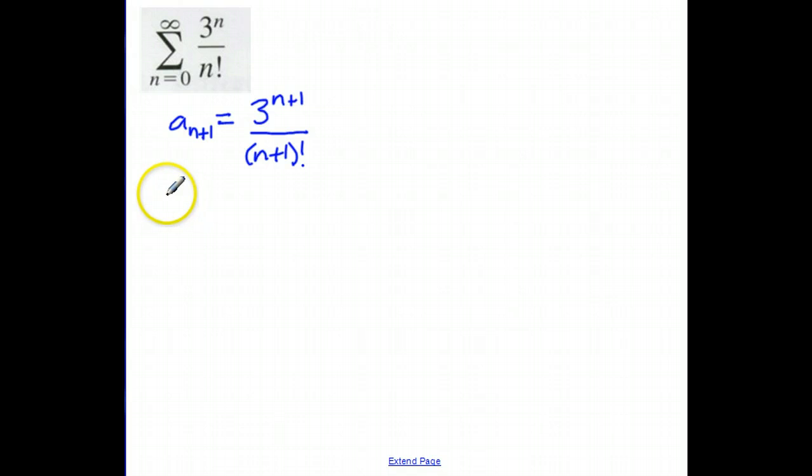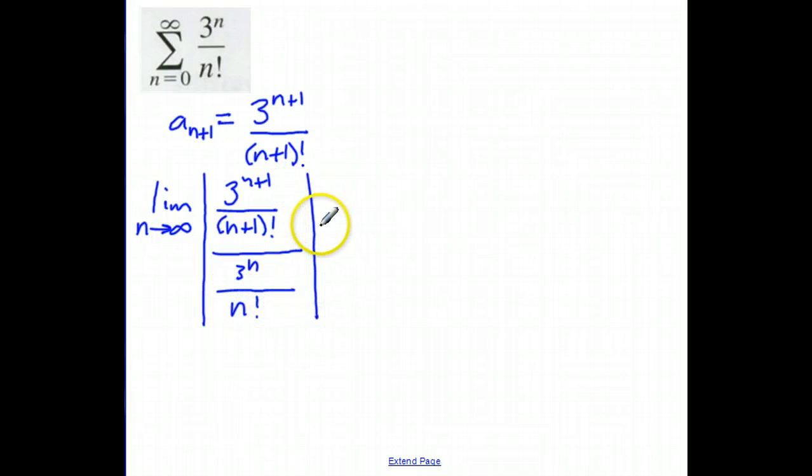So to test for convergence, we're going to take the limit as n approaches infinity of the absolute value of a sub n plus 1, that's what we just figured out, over a sub n. Now that's kind of awkward to write, so remember that when I'm dividing by a fraction, I can multiply by its reciprocal, so let's rewrite this.